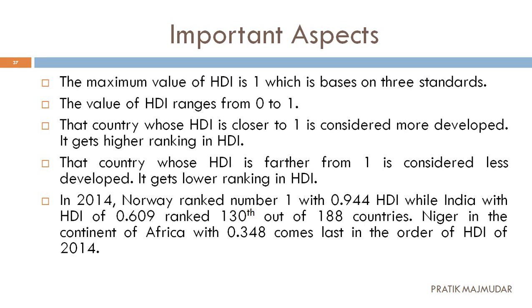Looking at the 2014 data: Norway ranked number 1 among all 188 participating countries with an HDI score of 0.944. India scored 0.609 and got the 130th rank out of 188 countries. Remember: India's HDI score was 0.609 at rank 130.